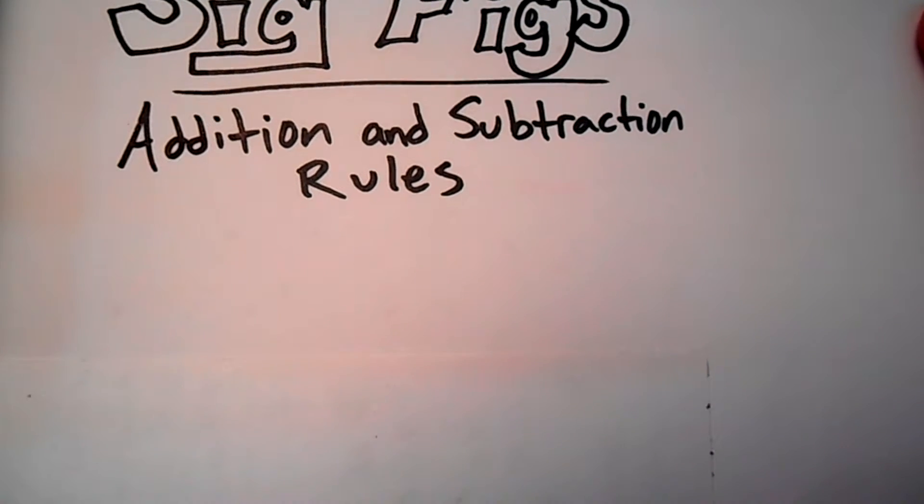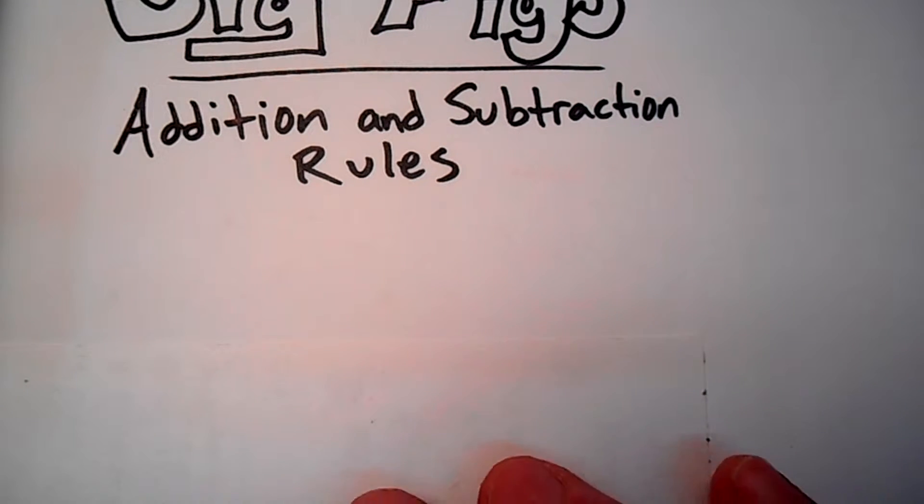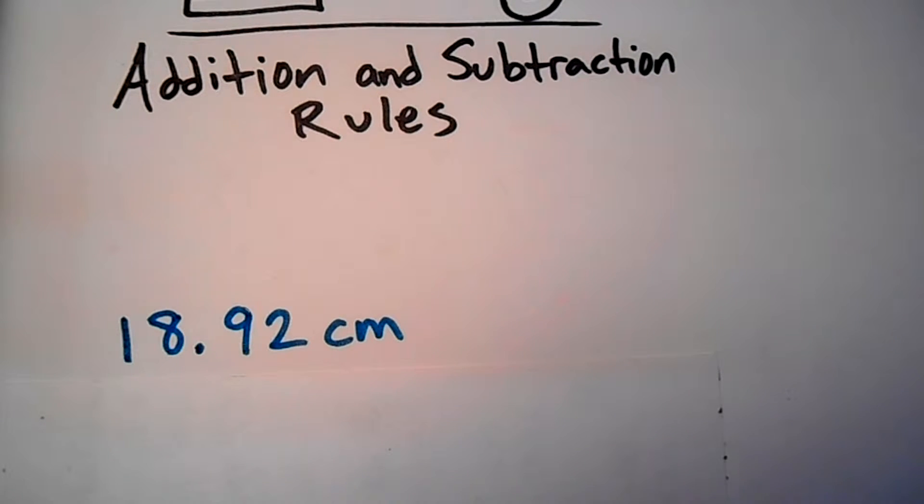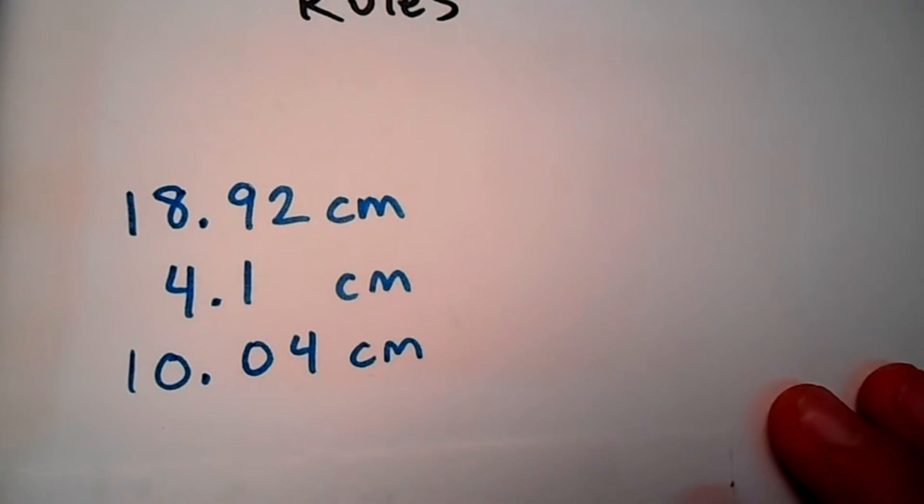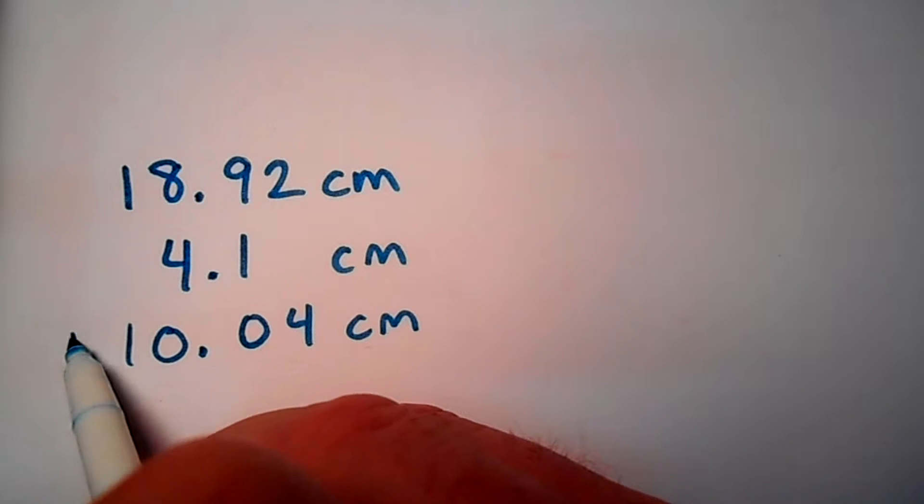Let's say you are trying to add up a total length of something. You've got multiple pieces, and you need to know the total length when you add them together. You get the first measurement from a device that can go to the hundredths place: 18.92 cm. The second measurement can only go to the tenths place: 4.1 cm. And a third measurement also goes to the hundredths place: 10.04 cm. I'll admit, I don't know how often this would happen where you'd use different precision instruments for the same measurement, but let's say you've got a situation like this. You want to add these all up to get a total length.